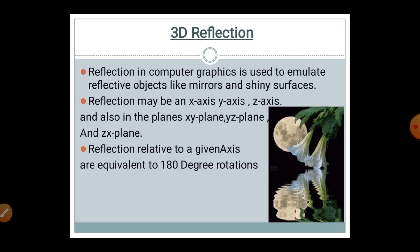3D reflection reflects the object in a mirroring pattern. Reflection may be along the X axis, Y axis, or Z axis, and also in planes: the XY plane, YZ plane, and ZX plane. Reflection is essentially a mirroring operation along a particular axis or plane, and reflection related to a given axis is equivalent to a 180-degree rotation.